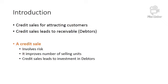Because of this, many times we have to provide credit facilities — selling goods today but giving customers the facility to repay the bill after 30, 45, or 60 days, depending upon industry standards and what competitors are offering. We also have to provide credit to our customers. Credit sales is very much necessary to attract customers, and because of this, when we make credit sales it ultimately piles up our debtors — it increases our debtors, also known as receivables.